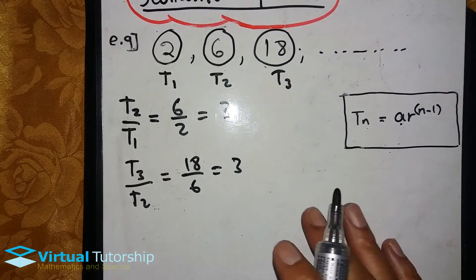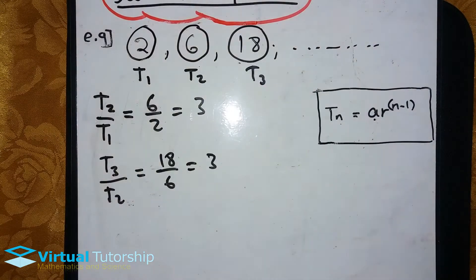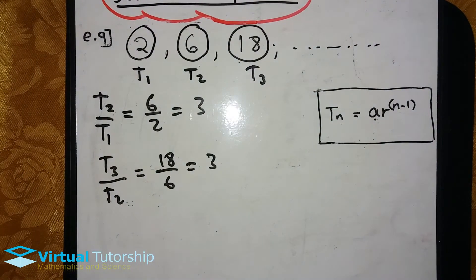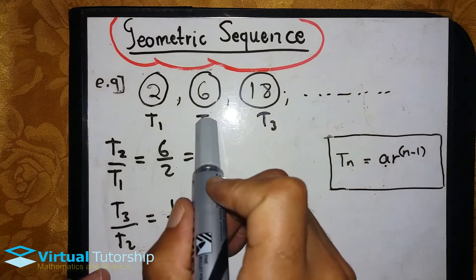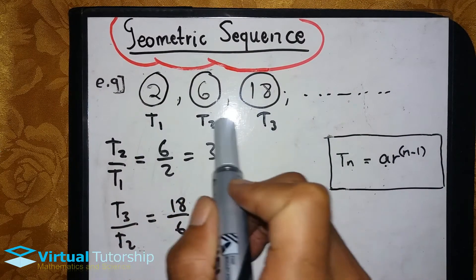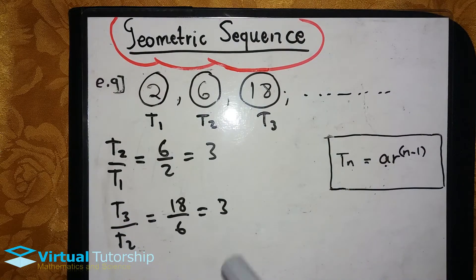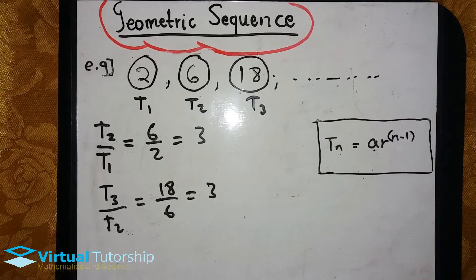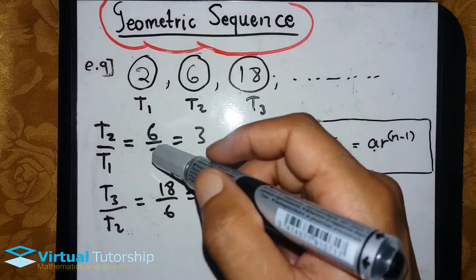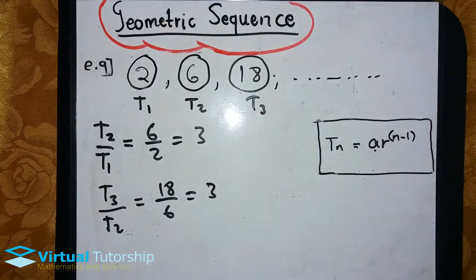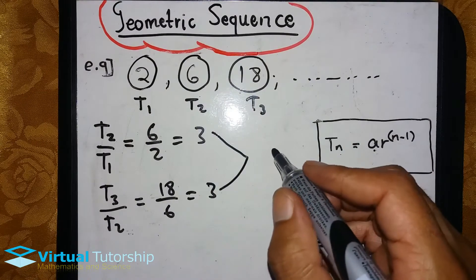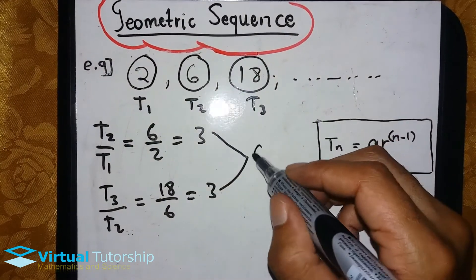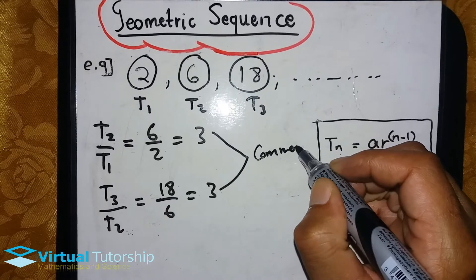So we are going to show you the common ratio through division. Unlike the arithmetic sequence, where we subtract two terms to find what we call a common difference, in the geometric sequence we divide instead. This common value is called the common ratio.